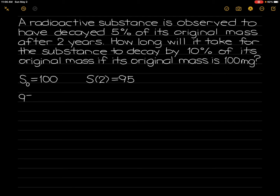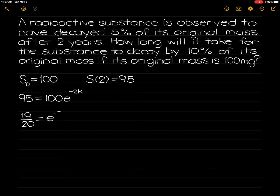So, 95 is equal to 100 times e raised to the negative 2 times k. We will now solve for k by dividing both sides by 100, which gives us 19 over 20 is equal to e raised to the negative 2 times k. So k is equal to negative one-half times the ln of 19 over 20.